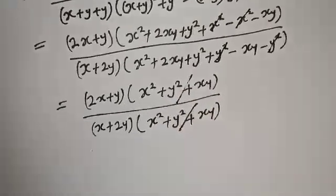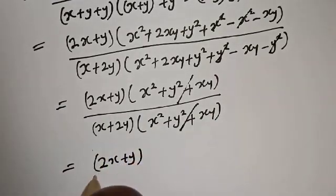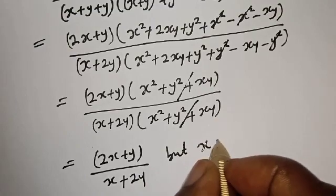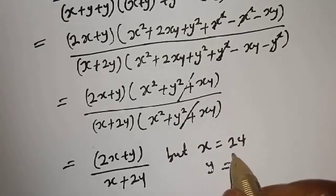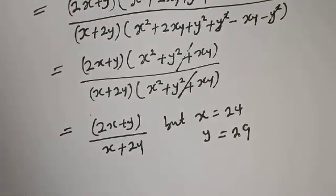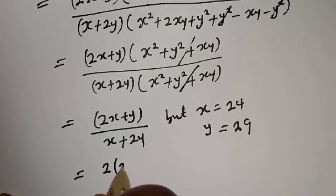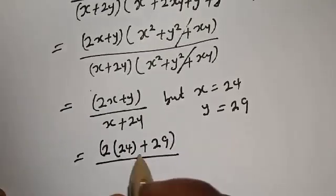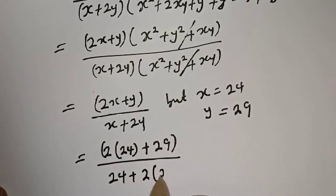The bracketed terms are the same, so they cancel. This is equal to 2s plus y over s plus 2y. Since s equals 24 and y equals 29, let's substitute: 2 multiplied by 24 plus 29, over 24 plus 2 multiplied by 29.